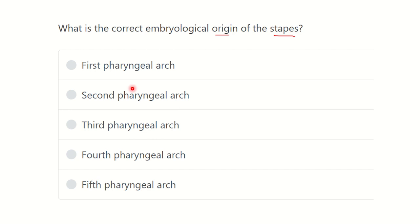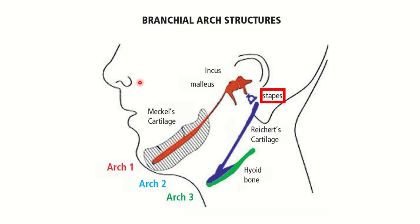Here we can see the branchial arch structures that develop from embryological structures. First we have the malleus, then the incus, then the stapes, then Reichert's cartilage, and then the hyoid bone.